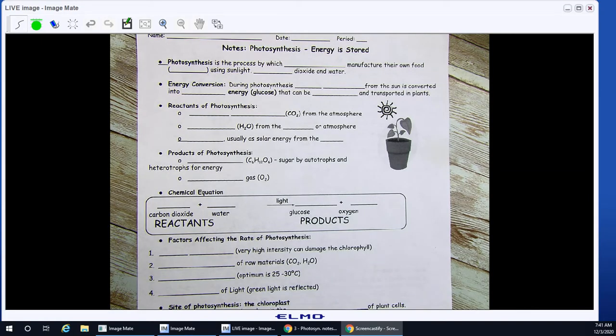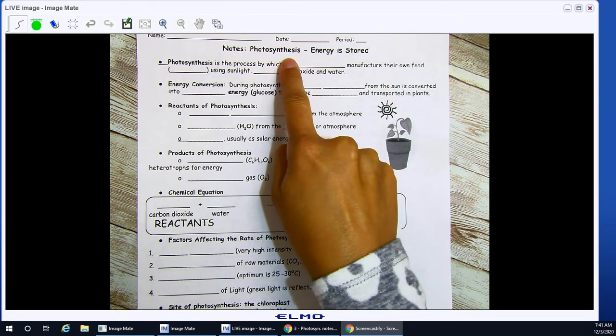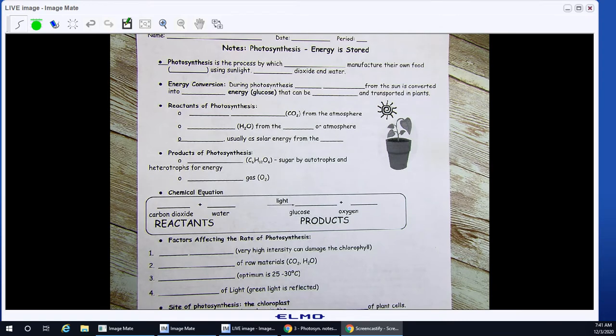Hey scientists, today we're going to be taking a look at photosynthesis. You have access to this in a digital Google document form. We are going to be talking about how energy is stored, as well as the process and the elements that are involved in photosynthesis.